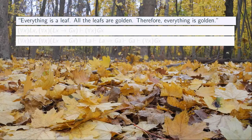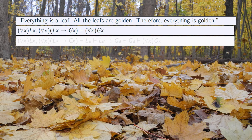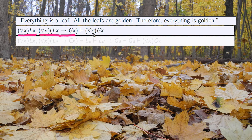Let's look at an example in the context of a proof. Suppose we say everything is a leaf, written as for all x, Lx, and all leaves are golden, written as for all x, Lx then Gx. Therefore everything is golden, written as for all x, Gx.